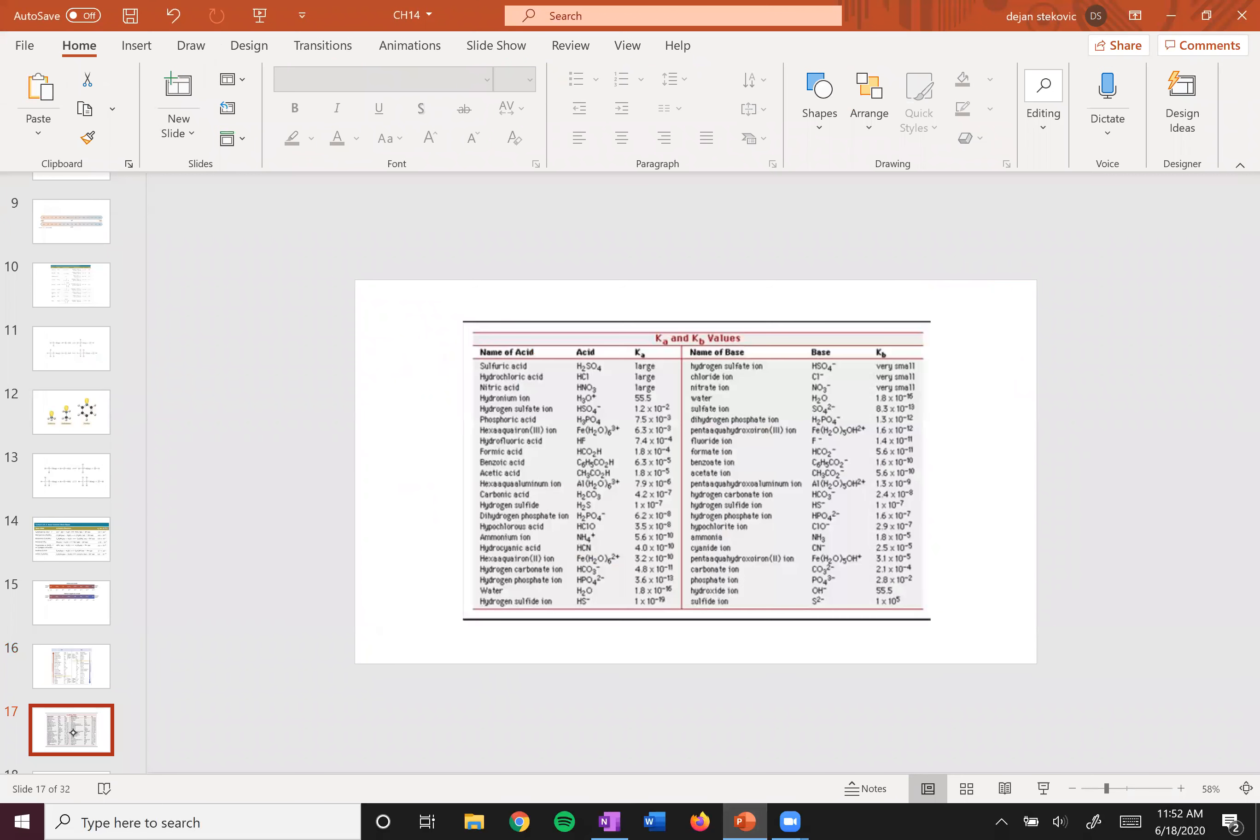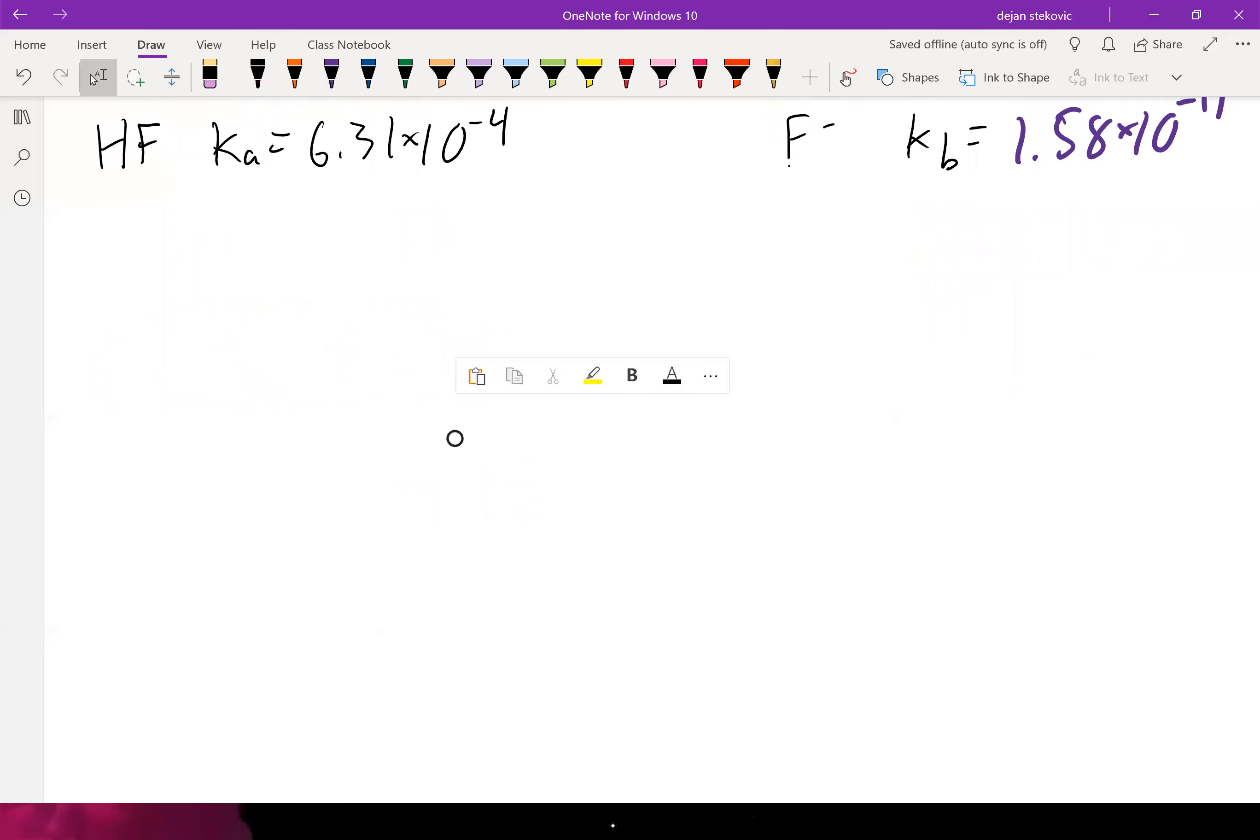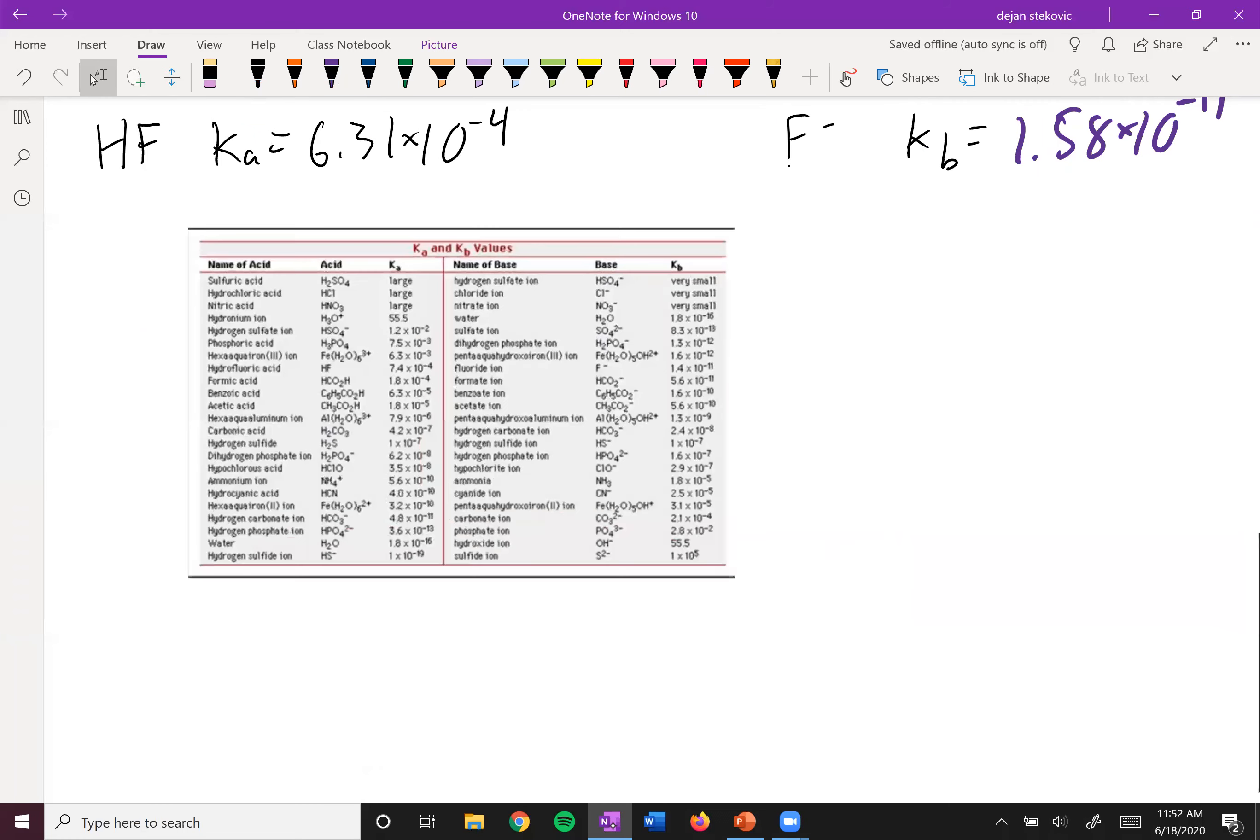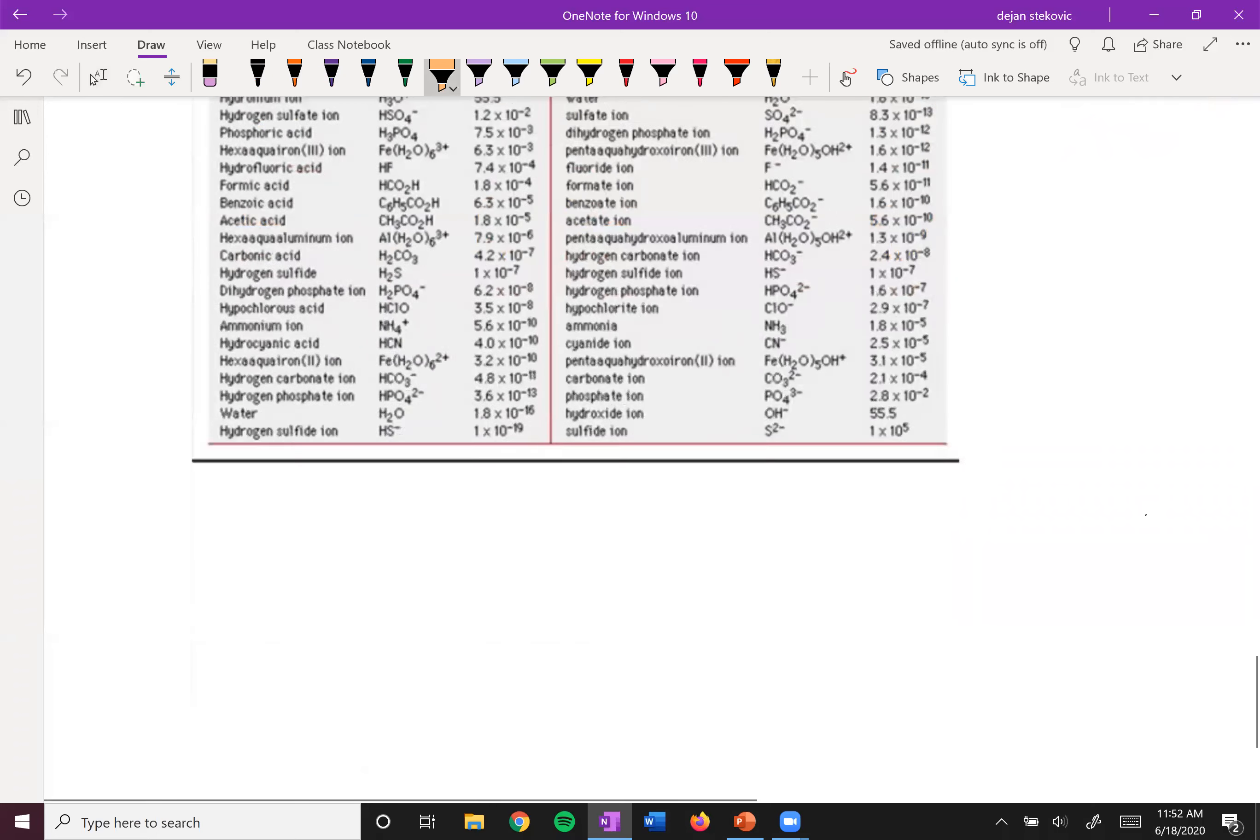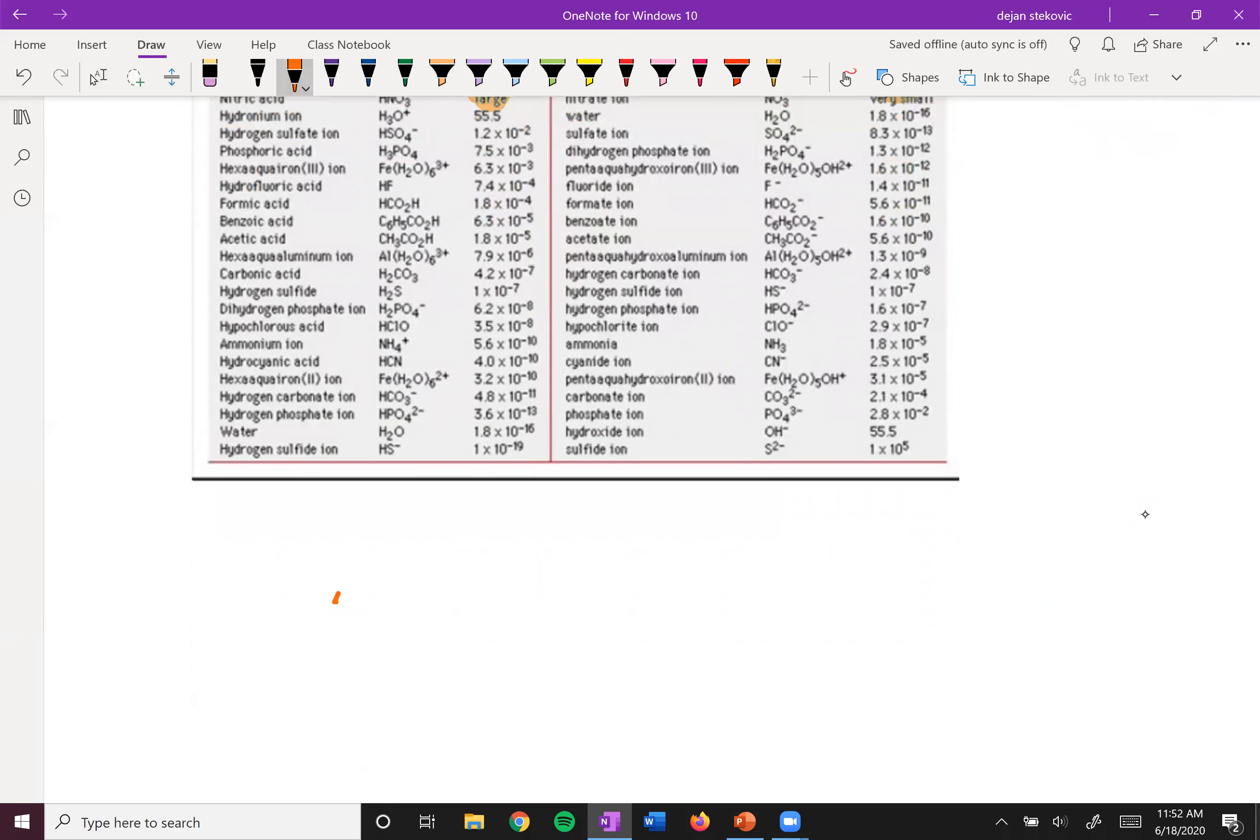Just yet another table that kind of shows the same thing. So there's some KA and some KB values of the acid and then the conjugate base. And you can see when one is very large, the other is very small and vice versa. Remember, they must be conjugate pairs.